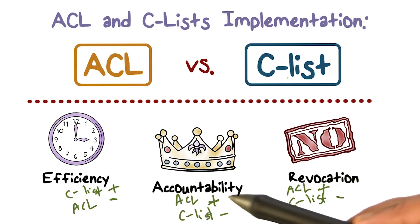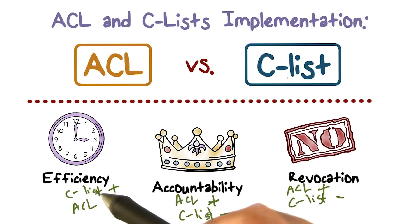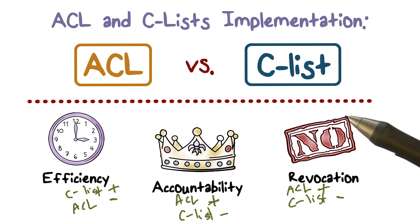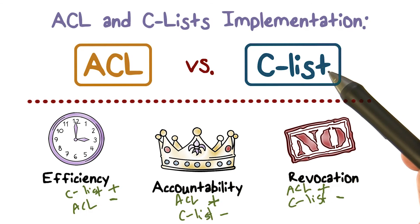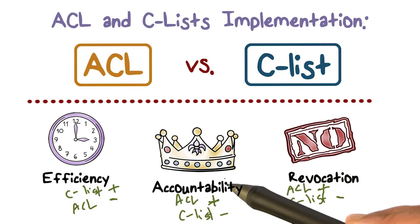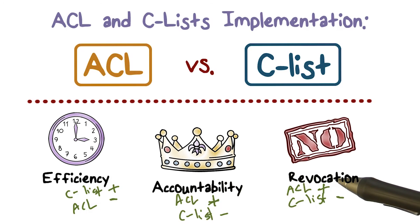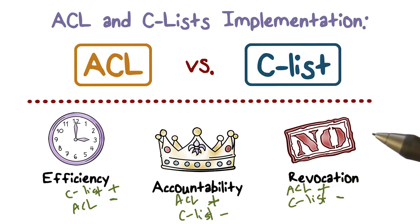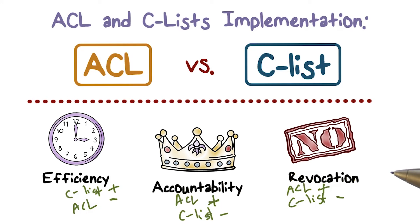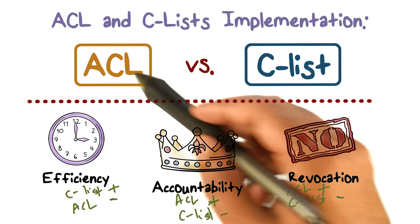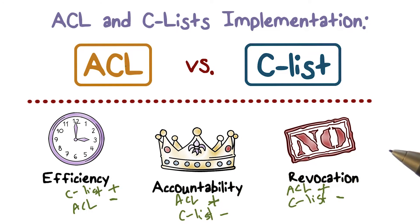So if you look at efficiency, CLists are better. But if you look at accountability and revocation, ACLs are better. There are obviously trade-offs to consider. Because of that, most operating systems choose to go the ACL route — but we're going to see how maybe we can get the best of both worlds.